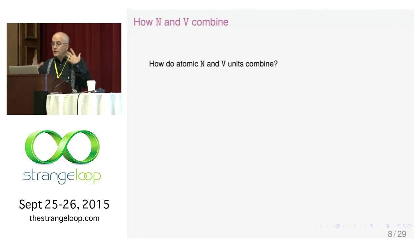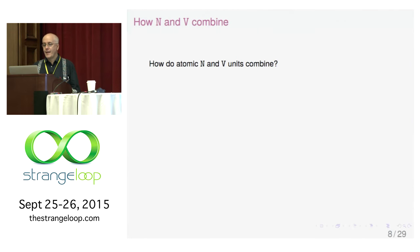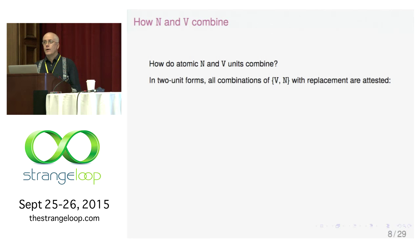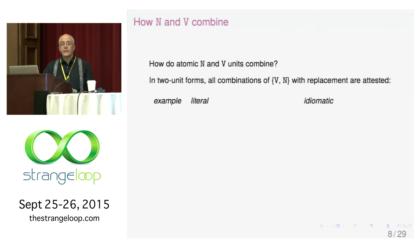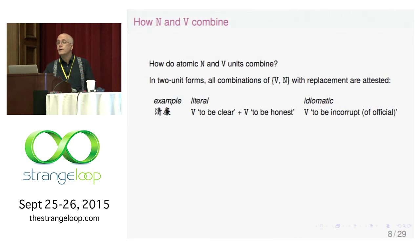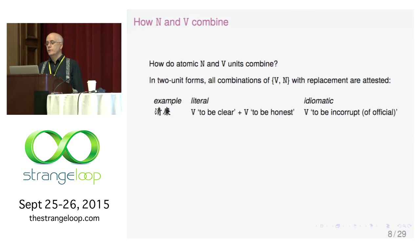We have atomic noun and verb units — let's say they're one character, one syllable in length. If we're talking about a pair of them, a group of two, you have four possibilities. All combinations with replacement — VV, VN, NV, and NN — are attested and all have meaning. For example, qinglian is a compound of two verbs: qing, to be clear like water or like your thoughts; lian, to be honest. Qinglian in reference to an official means to be incorrupt.